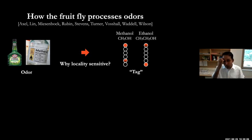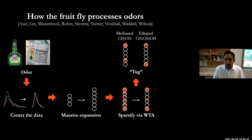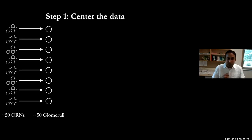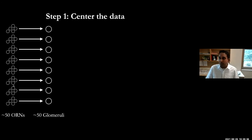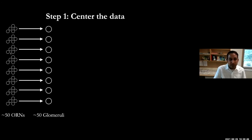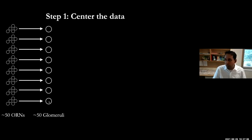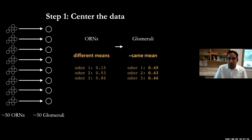Based on lots of work in the fruit fly community, the series of transformations from an input odor to this representation is very well defined. The first step starts in the antenna — the fly's nose — where there are 50 different types of odor receptor neurons that bind to certain molecules. You can think of an odor as a point in 50-dimensional space corresponding to the firing rates of these 50 different types of odor receptor neurons. These ORNs project to structures called glomeruli, and there are about 50 of these as well. The result of this transformation is a kind of mean-centering step.